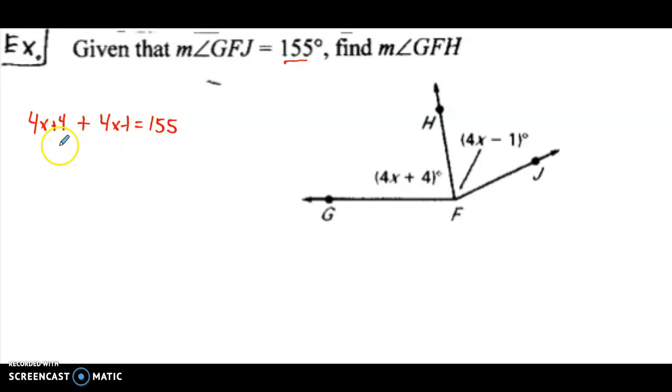We combine our like terms, 4x plus 4x is 8x. Our constants, 4 minus 1 is 3, so 8x plus 3 to equal 155.